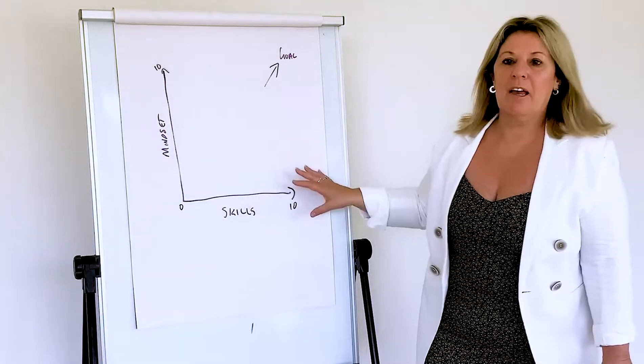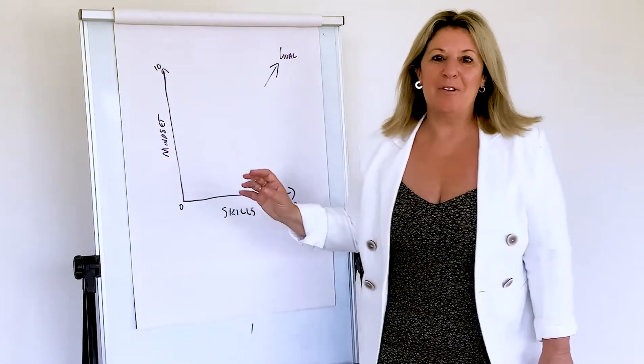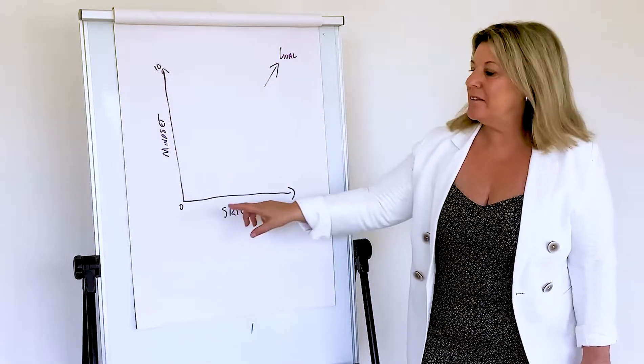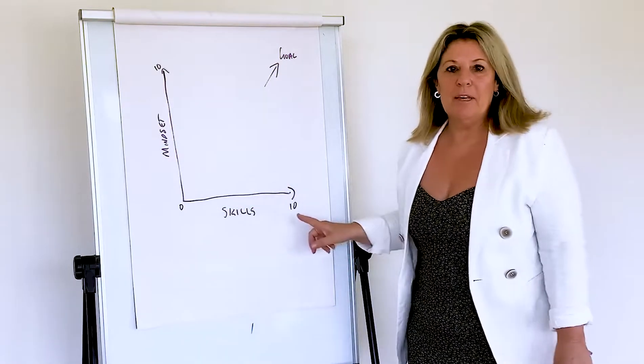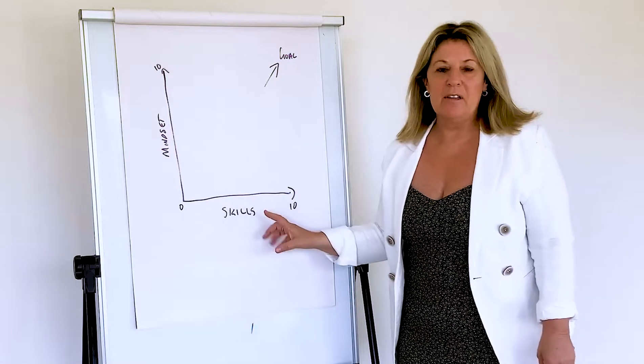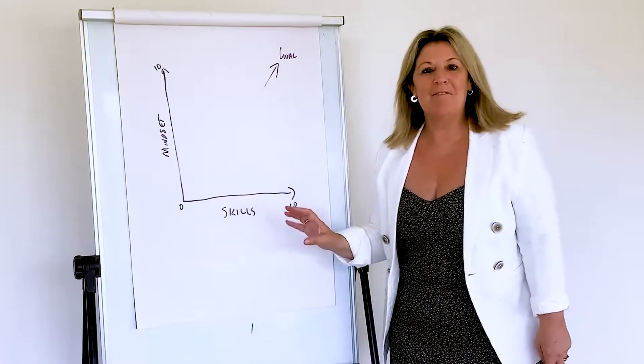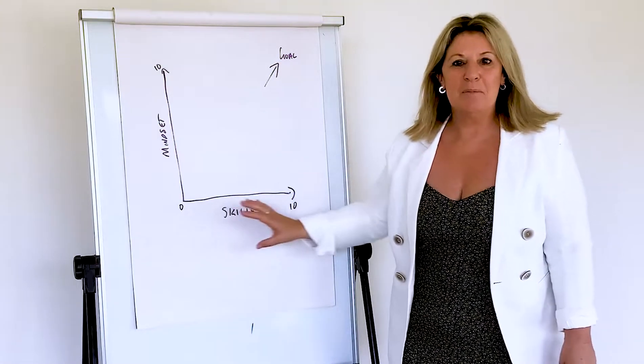I've put this table up here and I want you to ask yourself a couple of questions. On this table we have on the bottom here zero to ten skills. You probably have skills and talents in a particular area.